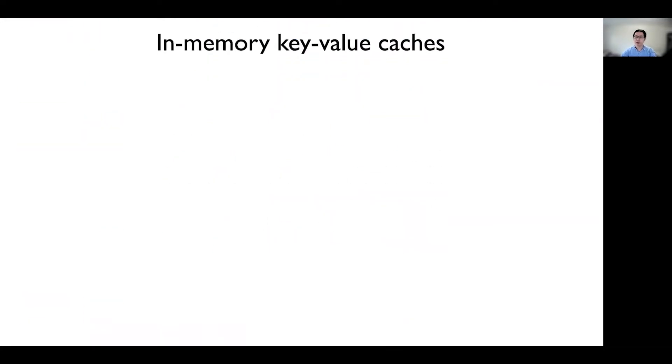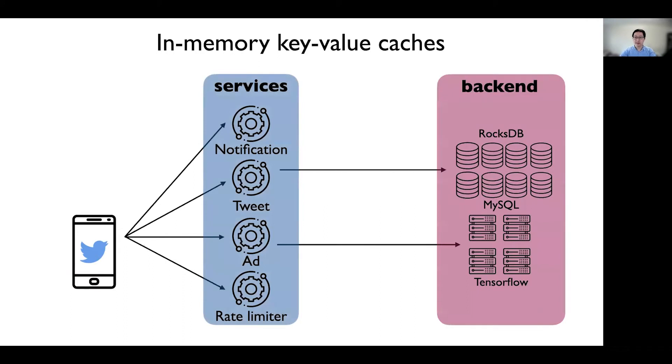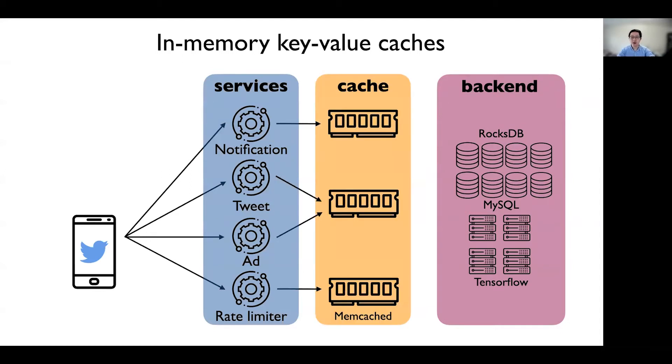Let's first talk about in-memory key-value cache. Let's say you open the Twitter app. The app indirectly sends a bunch of requests to different services. Some of these services are backed by backends such as durable key-value store or relational database or some computation service. Querying the data or result from the backend each time when the user sends a request is very expensive. Therefore, backend engineers usually add a cache in between the service and the backend to reduce latency, increase throughput and scalability, and also reduce the backend load.